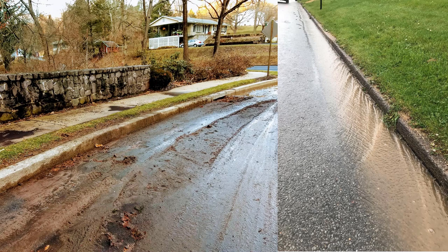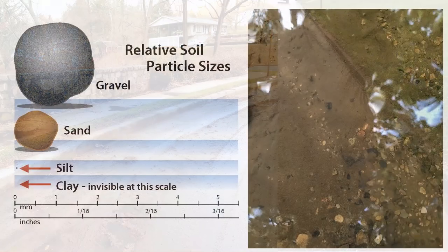Sediment is made up of soil particles that have been detached from the land by a process called erosion. In Pennsylvania, water is the primary cause for erosion, and sediment is often dislodged by rainwater and transported by stormwater runoff. Sediment can range in size from small pea-sized gravel to tiny soil particles, less than two millimeters in diameter, and is present in both native soil and some materials used for building unpaved roads, driveways, and farm lanes.